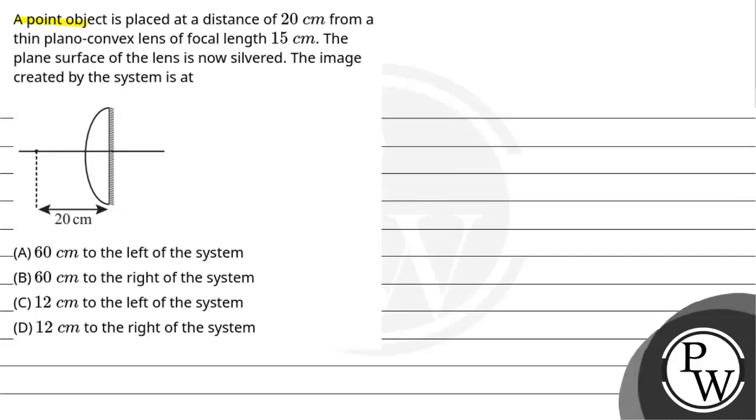Hello Bacho. Let us read this question. A point object is placed at a distance of 20 cm from a thin plano-convex lens of focal length 15 cm. The plane surface of the lens is now silvered.